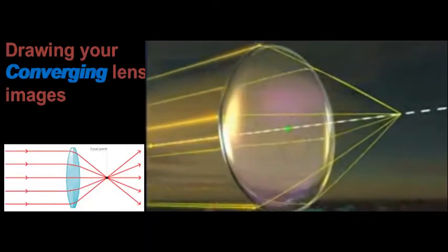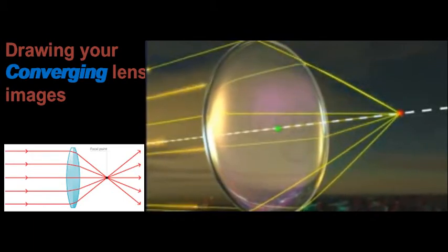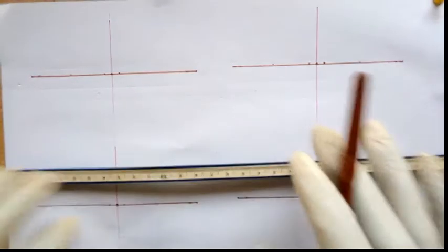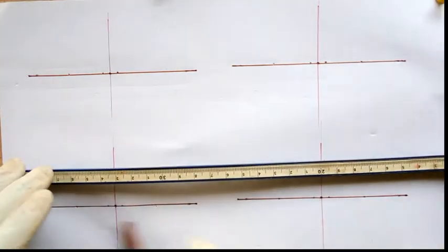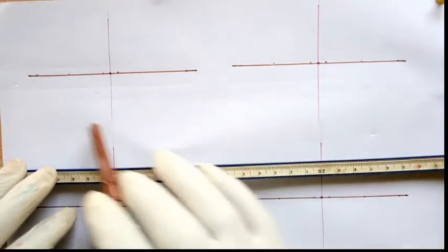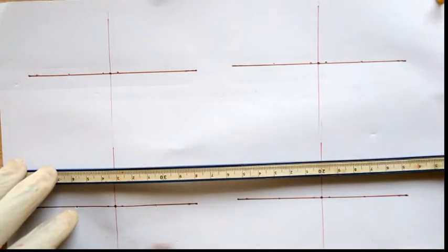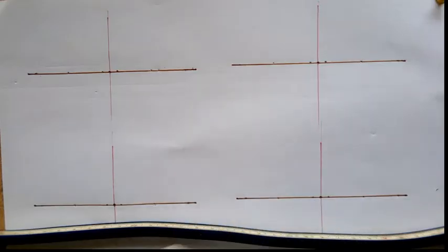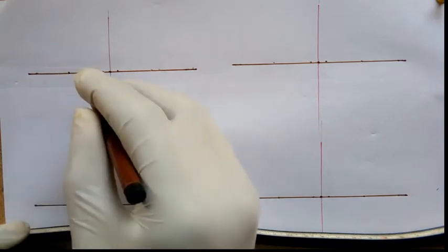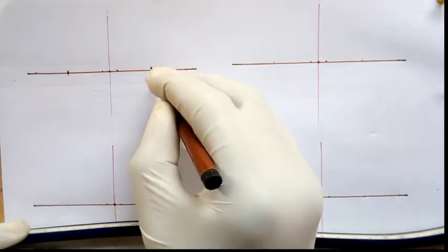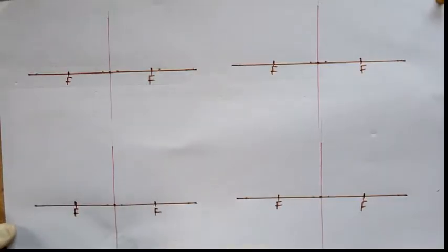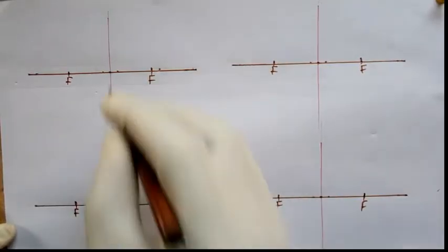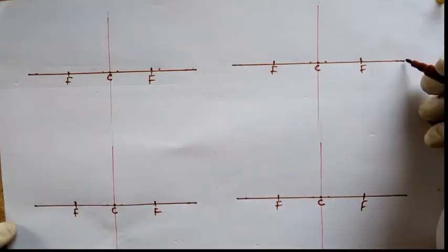Now, to the ray diagram. For the sake of this diagram, I will use values for this horizontal line, which we call the principal axis. Each of these lines are 10 cm, which means the principal focus should be at 2.5 in this part, which I've marked out. Here's F, here's your optical center, and here is 2F.